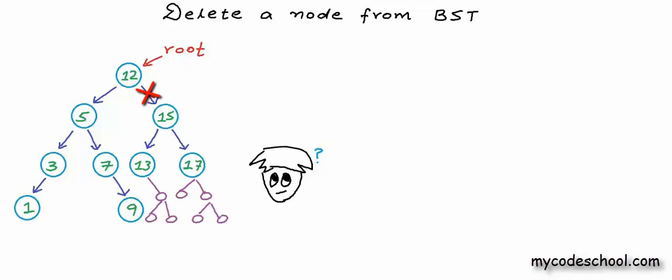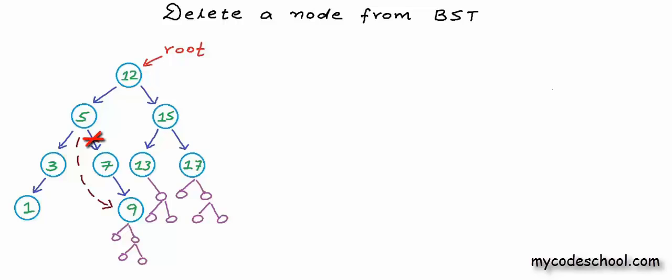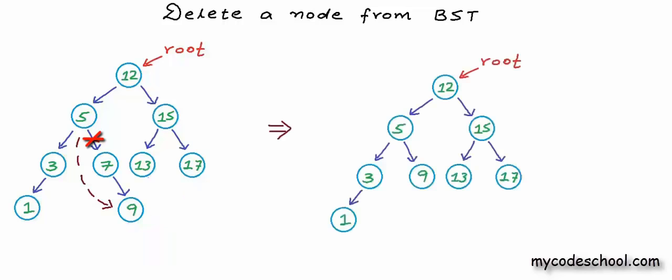What I want to discuss first is the case when the node being deleted has only one child. Like this node with value 7 — it has only a right child and no left child. For such a node, what we can do is link its parent to this only child. So the child and everything below it will remain attached to the tree, and only the node being deleted will be detached. We are not losing any other node than the node with value 7. After deletion, only the right subtree of node 5 has changed — earlier we had 7 and 9, now we have just 9.